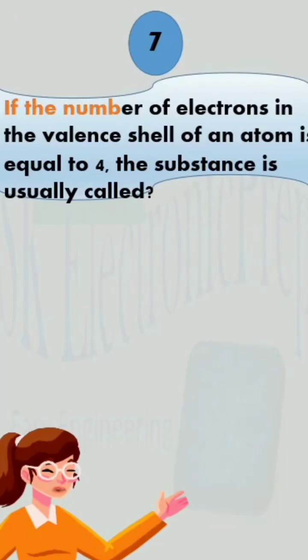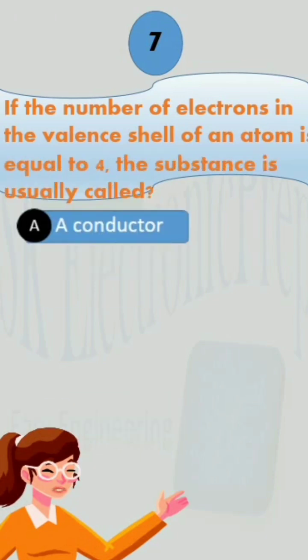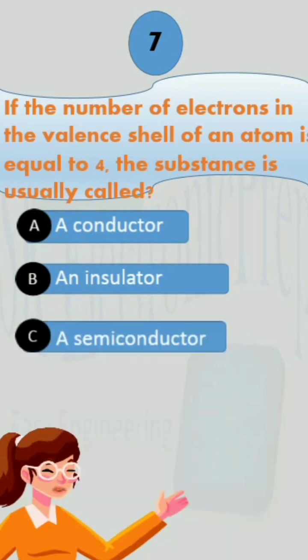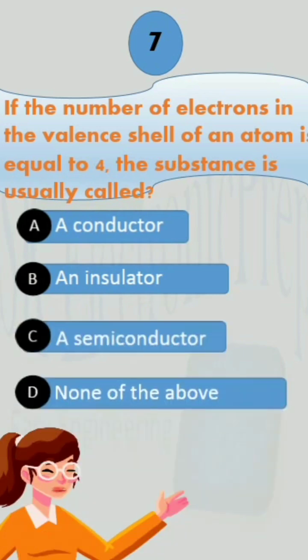If the number of electrons in the valence shell of an atom is equal to 4, the substance is usually called: option A, a conductor; B, an insulator; C, a semiconductor; D, none of the above.